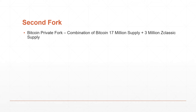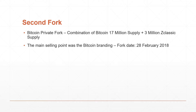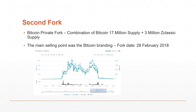The second fork was when Red returned to the project after abandoning it. It was basically the Bitcoin Private fork — a combination of Bitcoin's 17 million supply and the 3 million Zclassic supply. The main selling point was the Bitcoin branding, and the fork was on the 28th of February, 2018. You can see from a chart here the price actually went from around $2 to a high of $240, and then it dropped back down to about a low of $4.